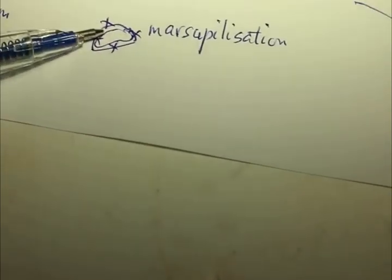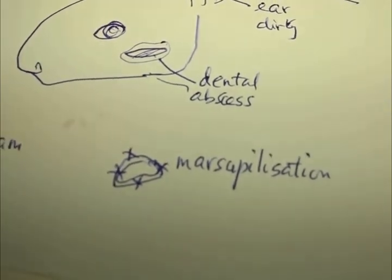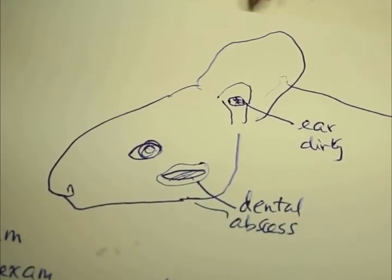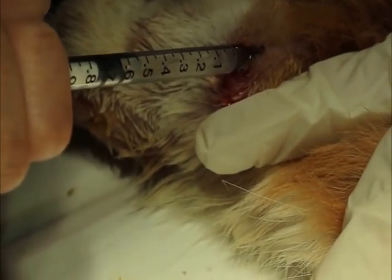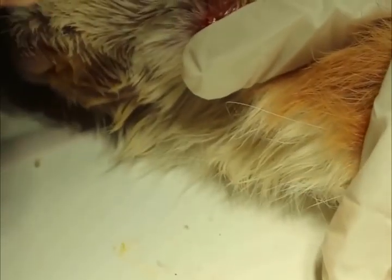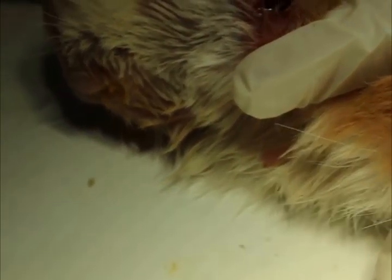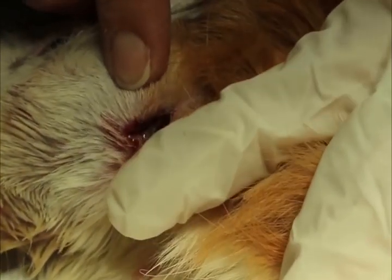Method 3 — Marsupialization: To do the marsupialization, you stitch up the mucosa to the skin — you stitch up the inside layer to the outer skin — and keep it as an open wound for a few weeks so the owner can clean it. The owner can syringe in chlorhexidine, which is what we are demonstrating now: every day, twice a day, to clear out the bacteria inside. This bacteria comes from the jaw abscess because of the decay in the teeth.